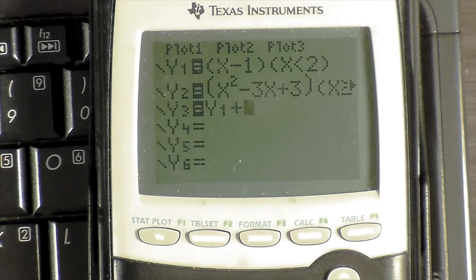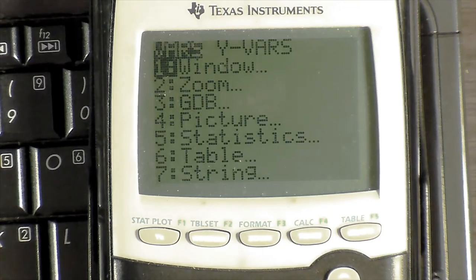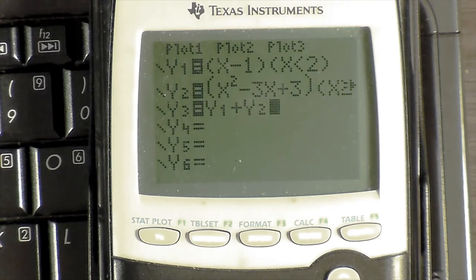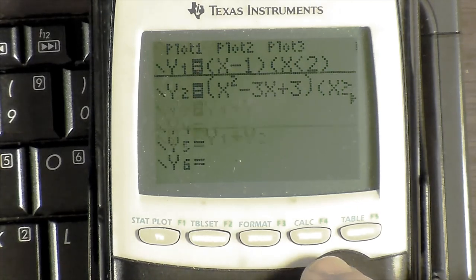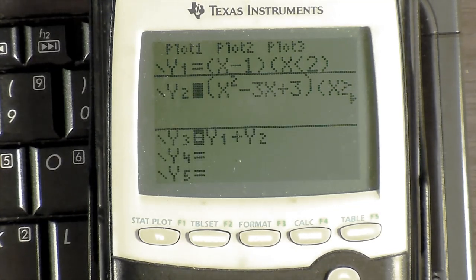So now we got Y1 as part of Y3. Now we want to add Y1 to Y2. We do the same thing again. We choose 2 for Y2. Now we have Y1 plus Y2. The only problem is now, Y1 and Y2 individually don't need to be plotted anymore, since Y3 takes care of everything now.